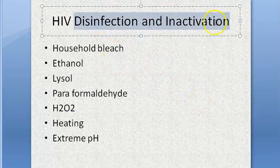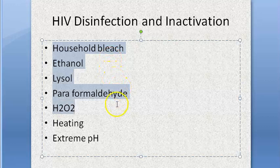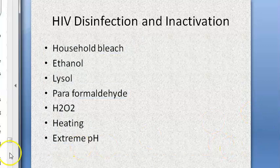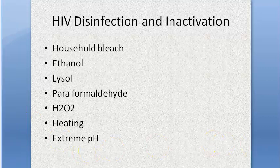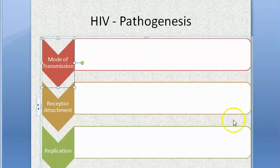For disinfection and inactivation: household bleach, ethanol, Lysol, formaldehyde, hydrogen peroxide, heating, and extreme pH can all kill or inactivate HIV. Now moving to the main topic of this video — pathogenesis.